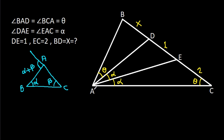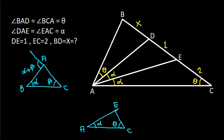In triangle AEC — with vertices A, E, C — this angle is alpha and this angle is theta, so the angle at E will be theta minus alpha.